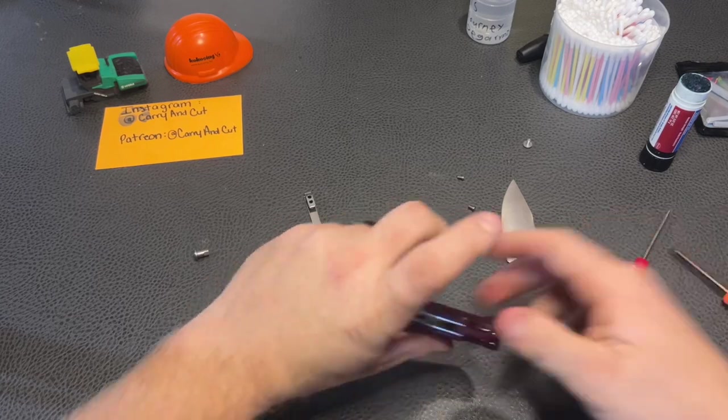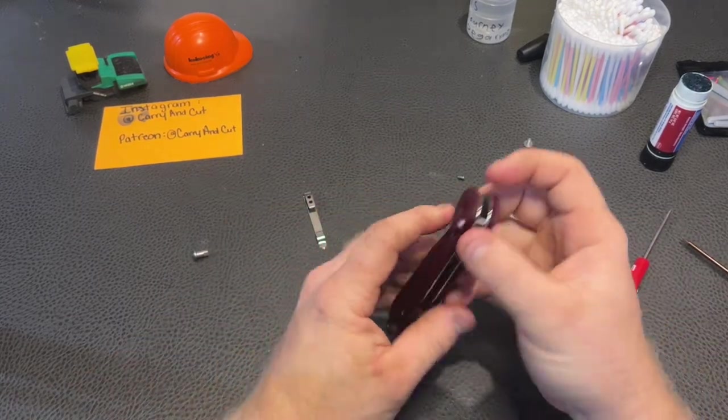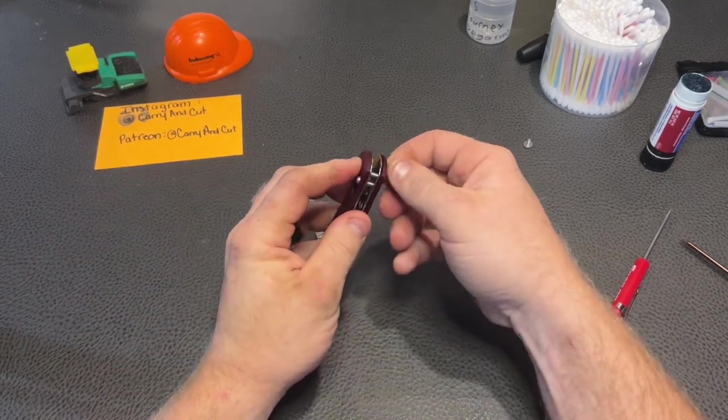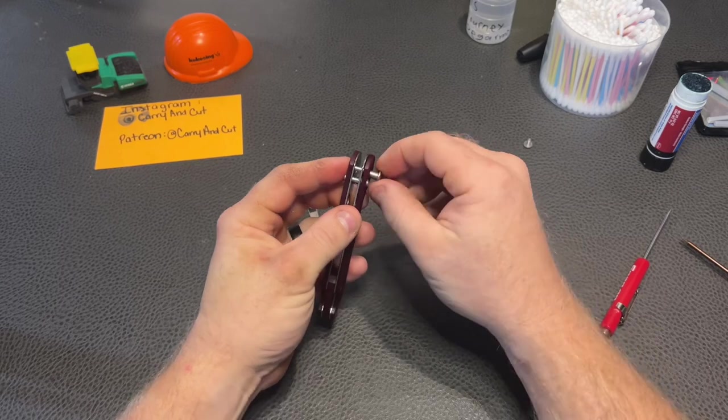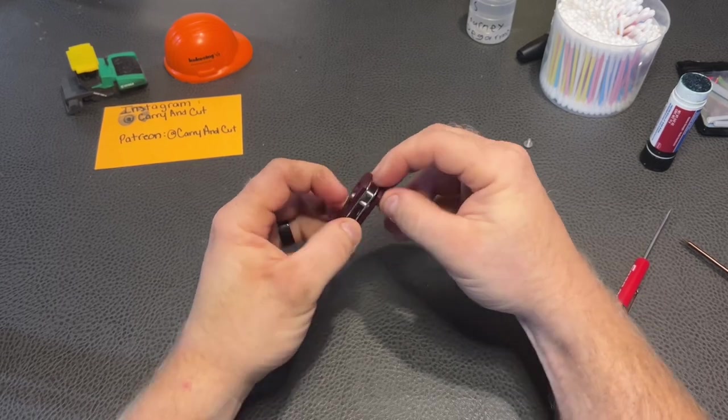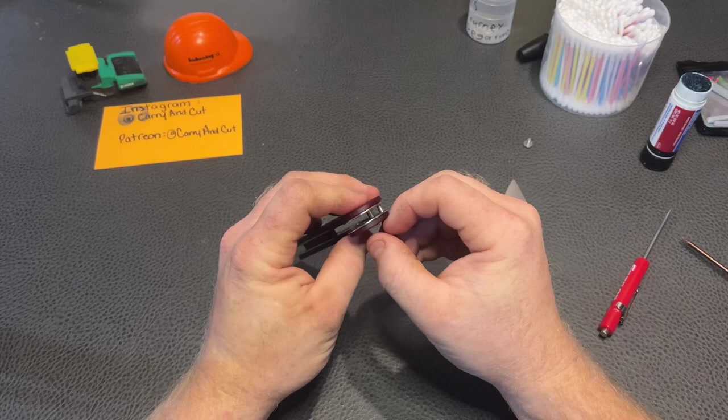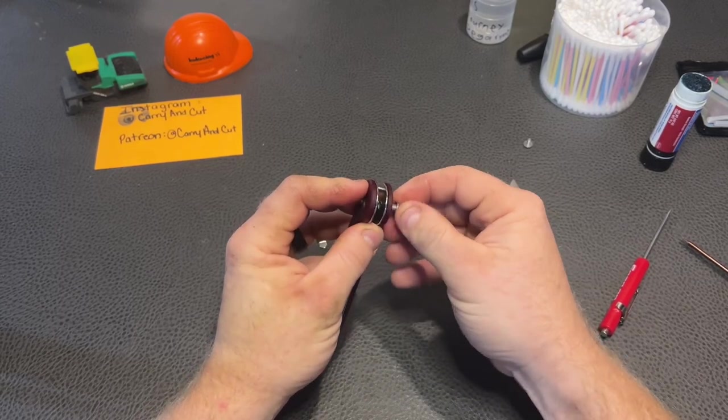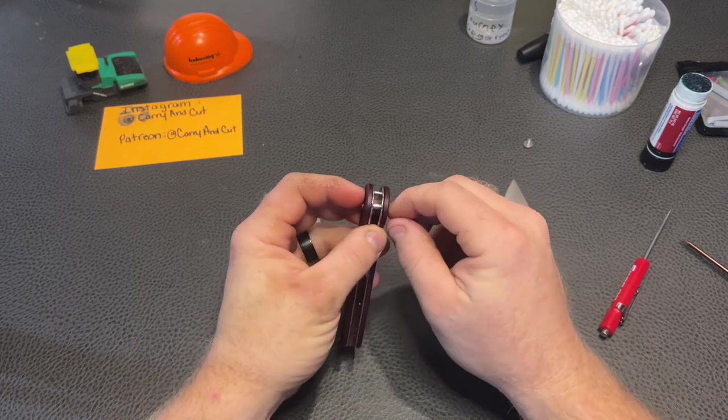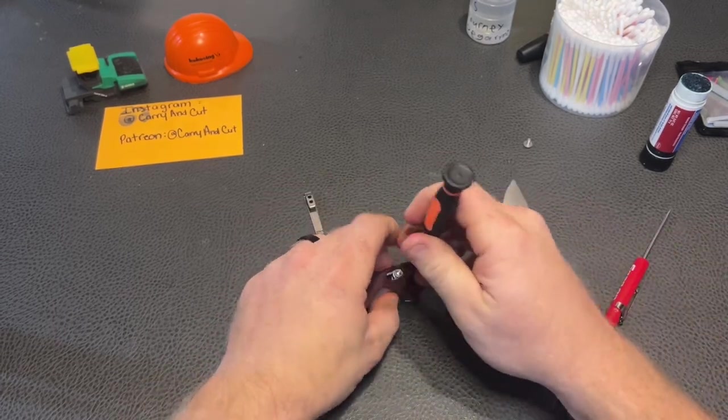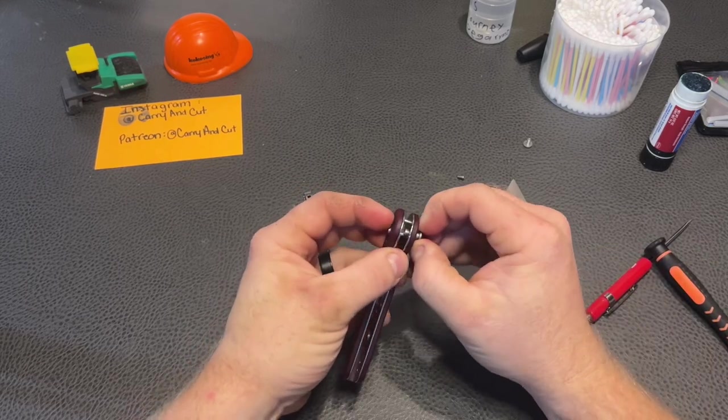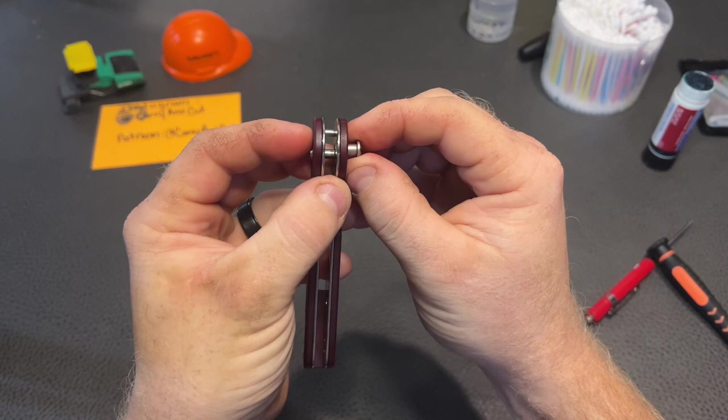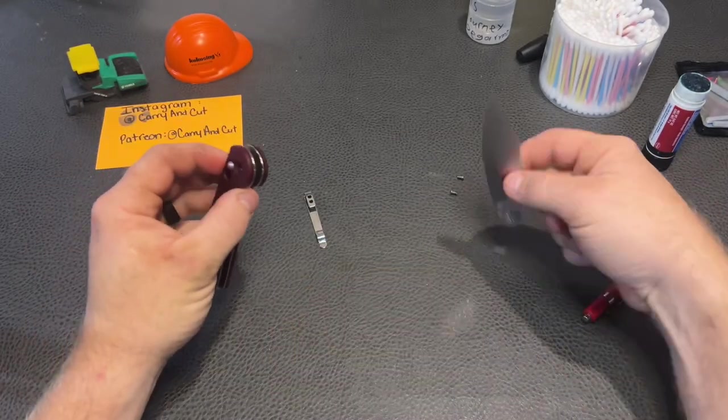You can do this side of the scale too. We'll just run our pivot in last. Definitely digging this color more than the jade G10, I'll tell you that. So now we're looking pretty good right there. Let's go ahead and try to test fit this pivot in here, see how it's feeling. There it went. Like so. Okay, so it's good.